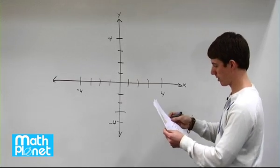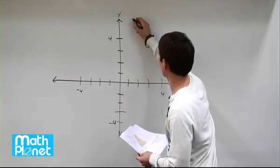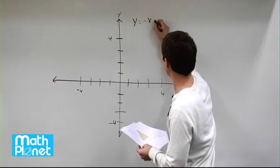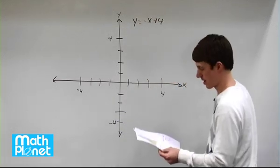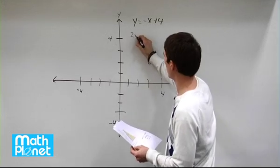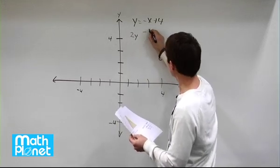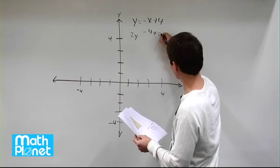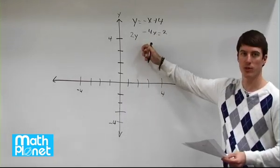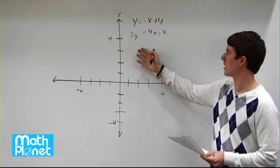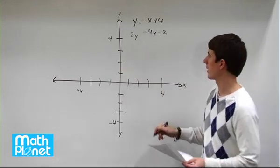So what we have are already in slope intercept form: y equals negative x plus 4, great. And then we also have 2y minus 4x equals 2. So we do want to solve this for slope intercept form first, and then we can draw both of them and compare.